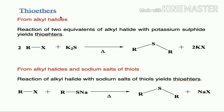Thioethers can be prepared from alkyl halides. The reaction of two equivalents of alkyl halides with potassium sulfide under thermal conditions yields thioethers. Another method uses the same substrate — alkyl halide — but reacted with the sodium salt of a thiol.